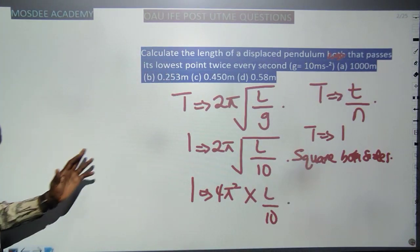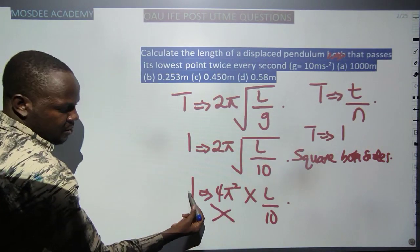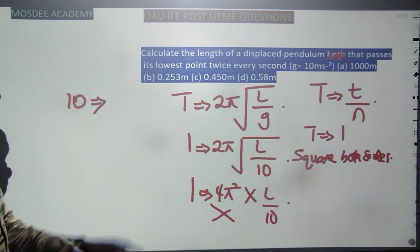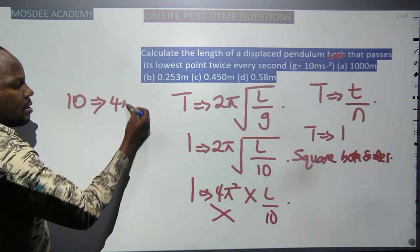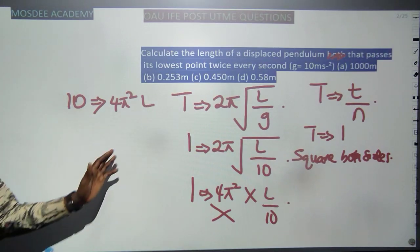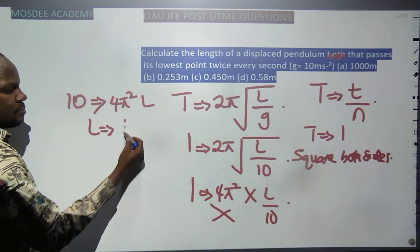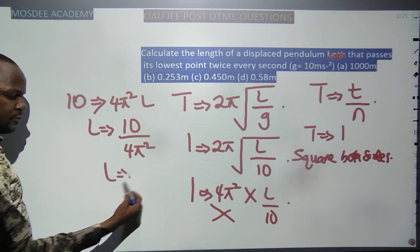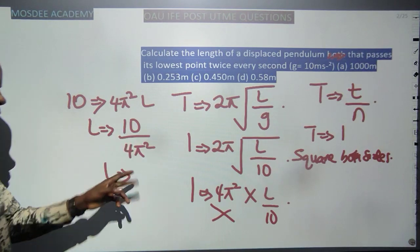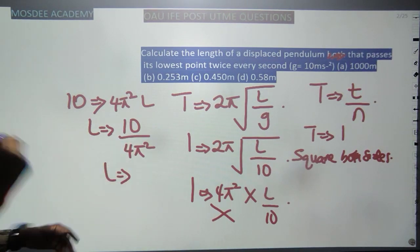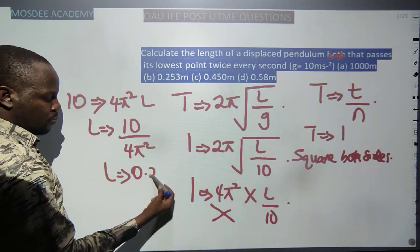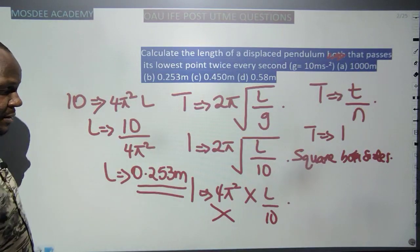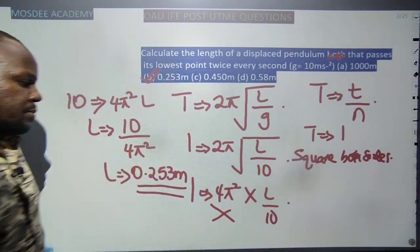Continuing simplification: L = 10/(4π²). With π = 3.142, this gives 4π² ≈ 39.48, so L ≈ 0.253 metres. This tallies with option B.